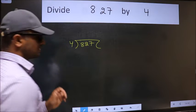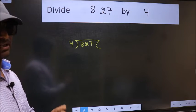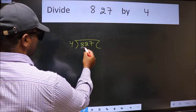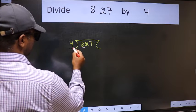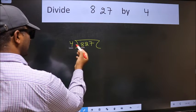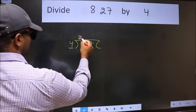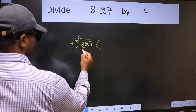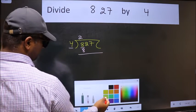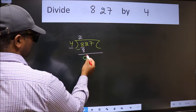This is your step 1. Here we have 8 and here 4. When do we get 8 in the 4 table? 4 twos are 8. Now we should subtract. We get 0.